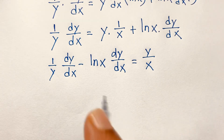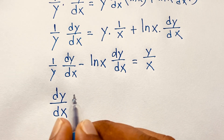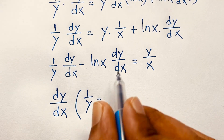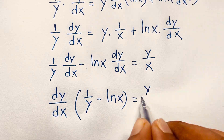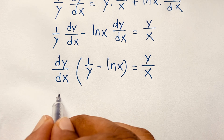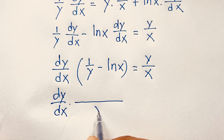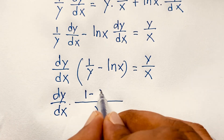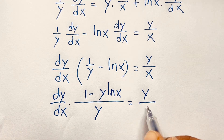We take dy/dx as a common factor. Moving the ln x times dy/dx term to the left side, we get dy/dx times (one over y minus ln x) equals y over x. Taking a common denominator of y on the left side, this becomes dy/dx times (1 minus y ln x) over y equals y over x.